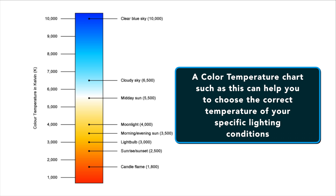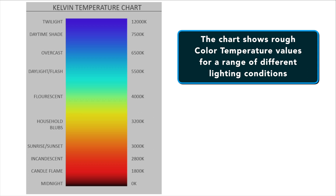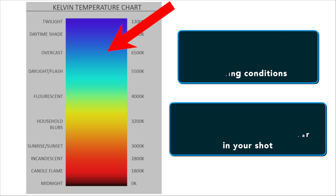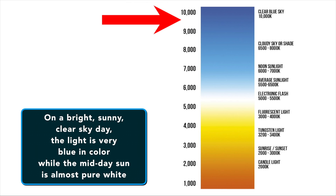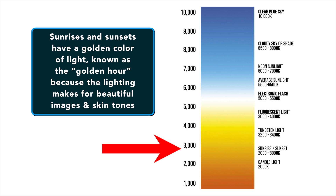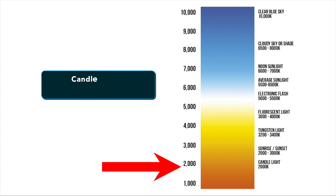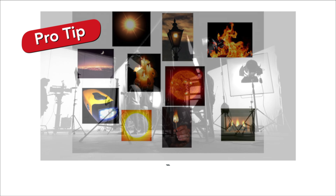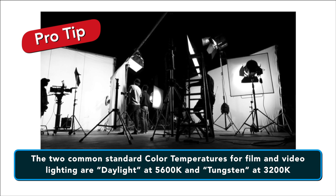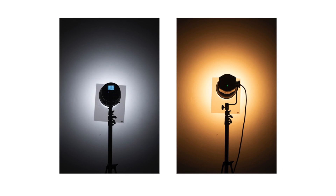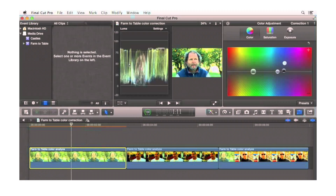Alternatively, if your camera allows it, you can make an educated guess using a color temperature chart like the one shown here — you can find these online. The chart shows rough color temperature values for a range of different conditions, with a colored bar showing the hue and strength of any color cast that might appear in different lighting conditions. On a bright sunny clear-sky day the light is very blue, while the midday sun is almost pure white. Sunrise and sunset produce a golden color known as the golden hour — photographers love it for beautiful skin tones. Candles are very orange. The two standard color temperatures most often used in film and video lighting are daylight at 5600 Kelvin and tungsten at 3200 Kelvin.